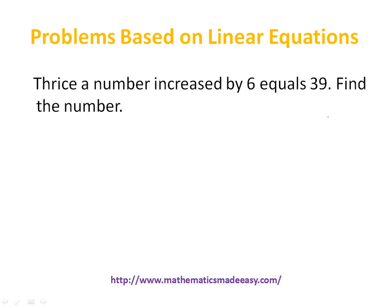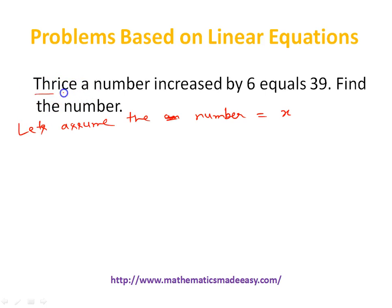Moving to the next question: Thrice a number increased by 6 equals 39 — find the number. So let's assume the number is x. Thrice a number means 3x, increased by 6 equals 39. So we have the equation 3x plus 6 equals 39. This has become a very simple linear equation in x.